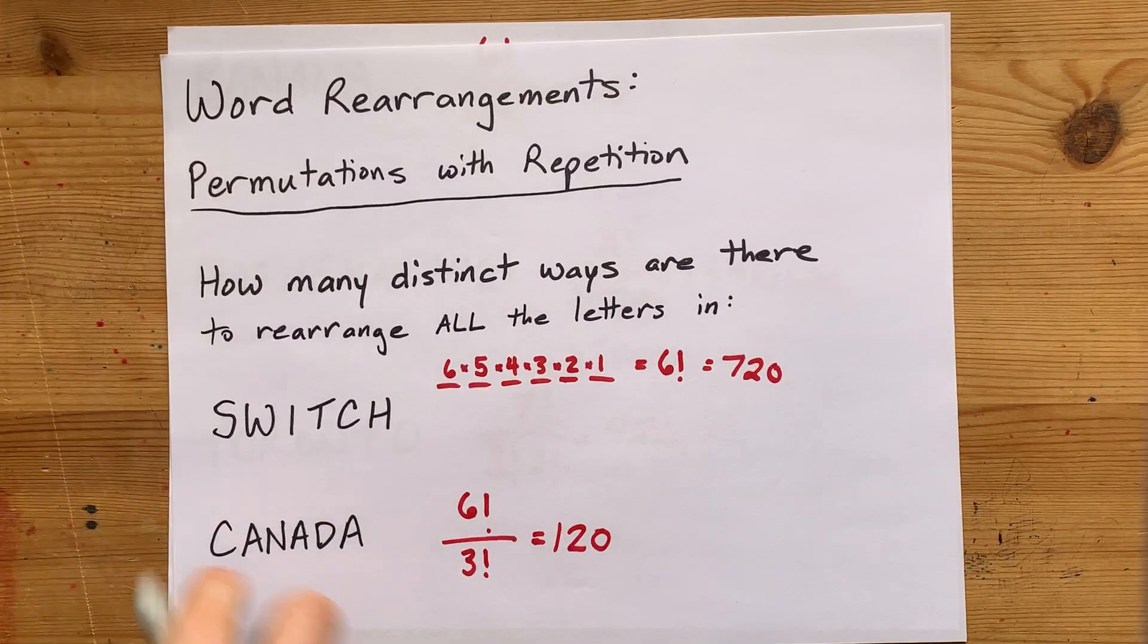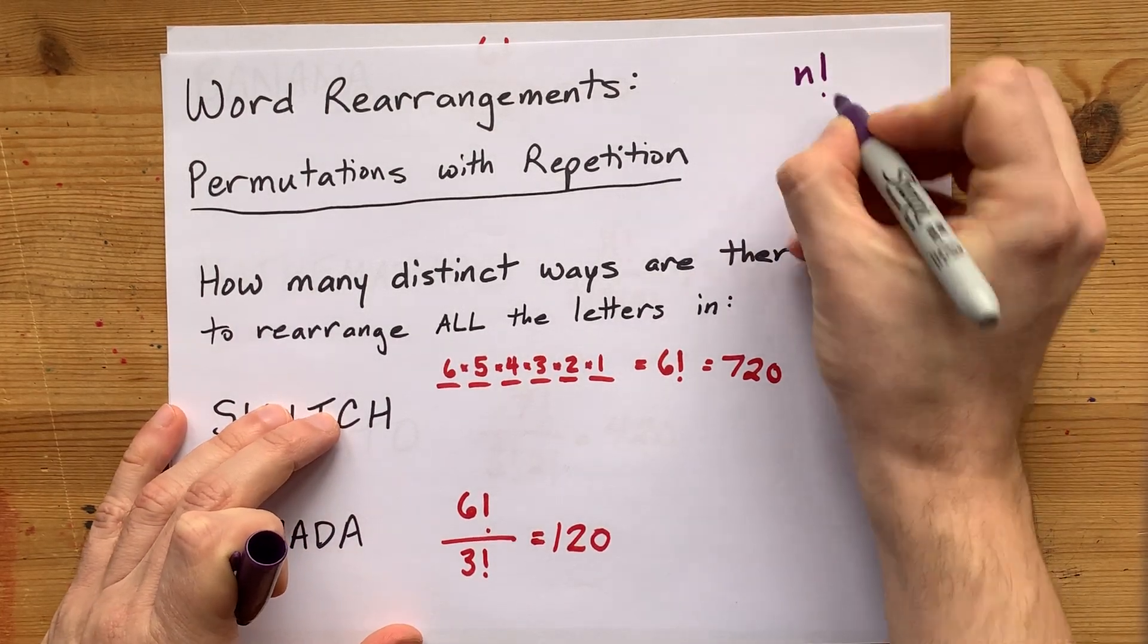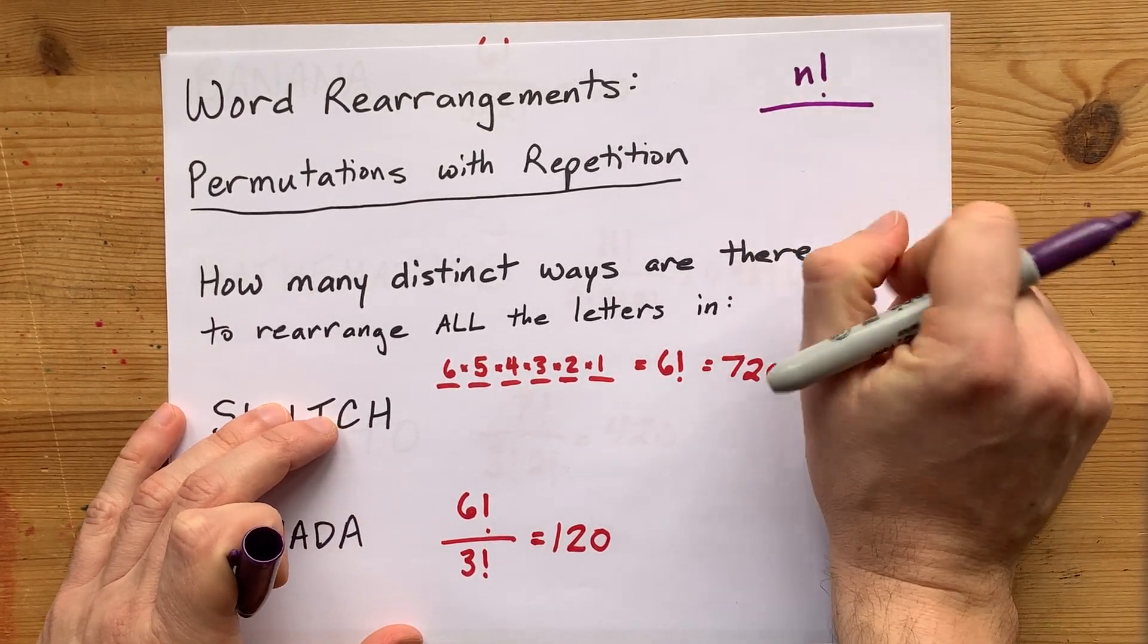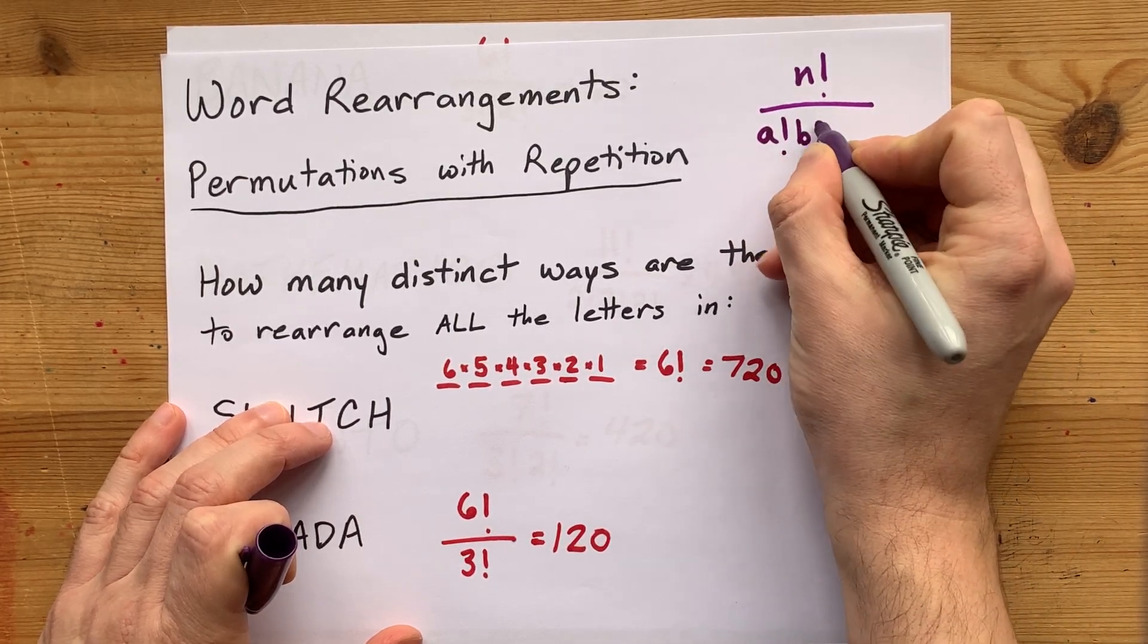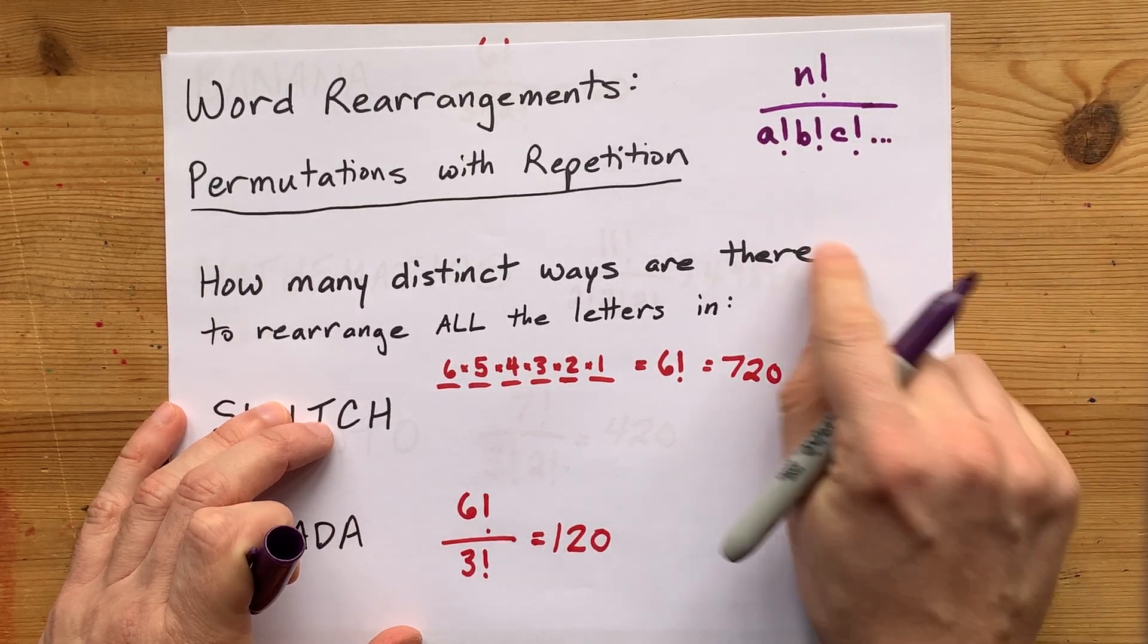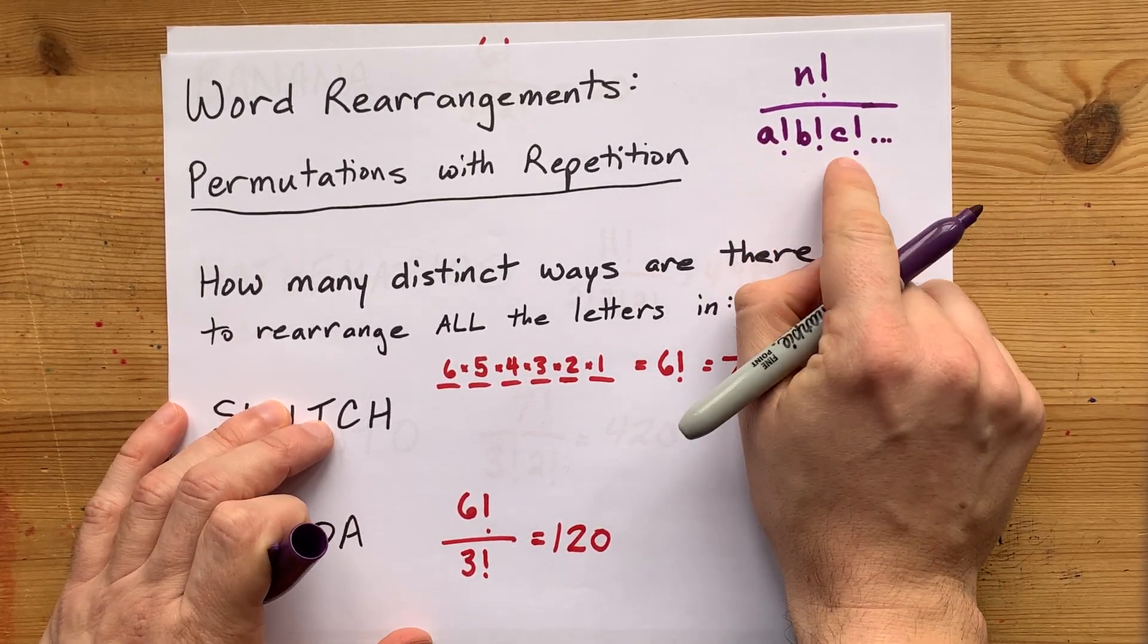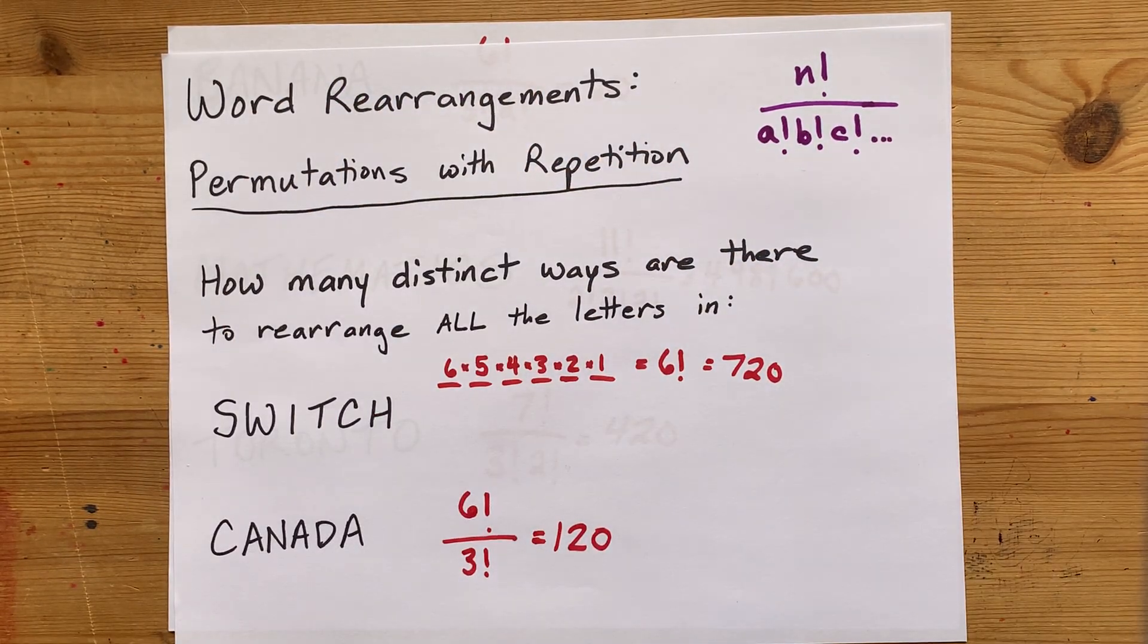If you're looking for a generic formula for this, the way that we write it is N factorial for the number of letters in the original word, divided by A factorial, B factorial, C factorial, dot dot dot, where this and this and this all represent the double, triple, quadruple letters that you might have in your word.